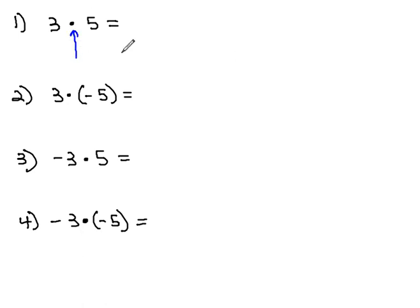When we see 3 times 5, what this really means is we are going to add together 3 sets of 5. In other words, we've got 5 plus 5 plus 5, 3 fives added together. And when we add those 3 positive fives together, we get a positive answer, 15.